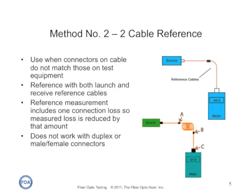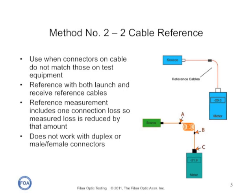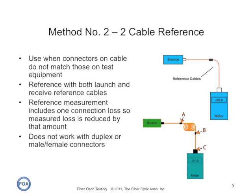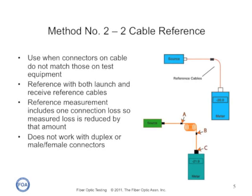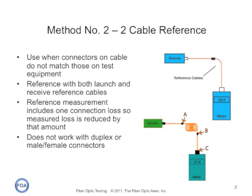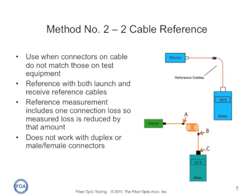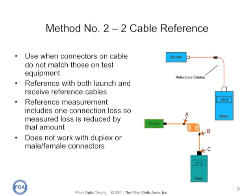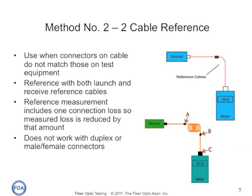If the connectors on our cable plant are different than the connectors on our instruments — for example, we're measuring LC cables with ST or SC meters and sources — we can use what's called a two-cable reference. Here we use hybrid reference cables that mate to our instruments on one end and mate to the cable plant on the other. When we set the reference, we include the loss of the connection between the two reference cables. So when we make our final test, the measured loss of the cable plant will be smaller by the loss of that connection between the two reference cables.